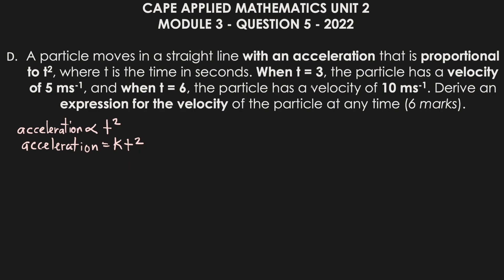They told us when t is equal to 3, v is equal to 5, and when t is equal to 6, v is equal to 10 meters per second. They want us to derive an expression for the velocity of the particle at any time, so we need to somehow turn the equation acceleration equals k·t² into velocity.